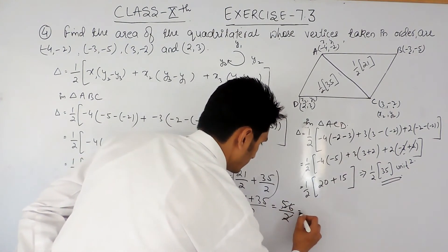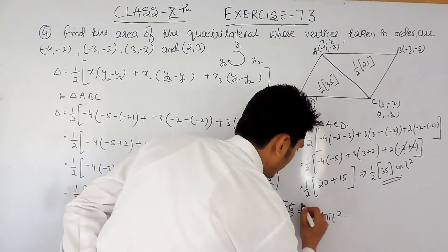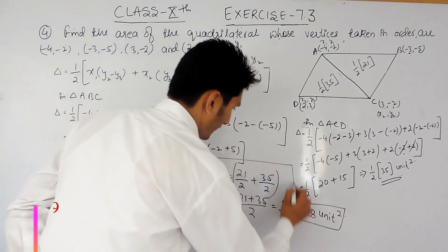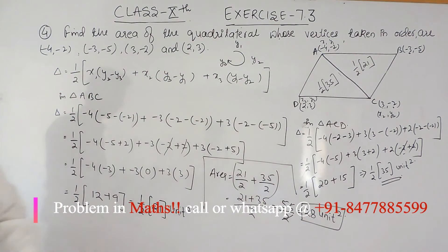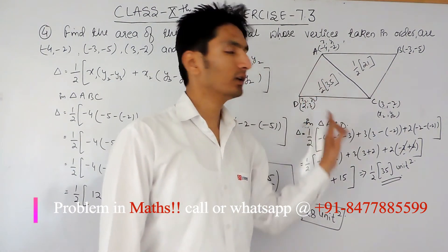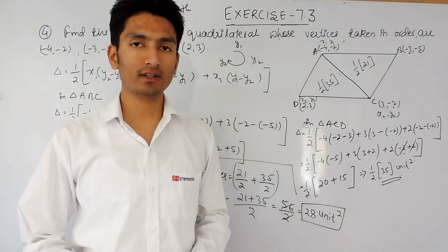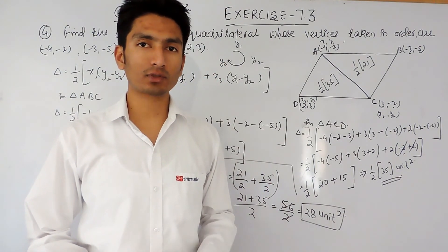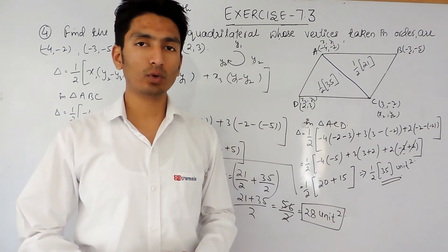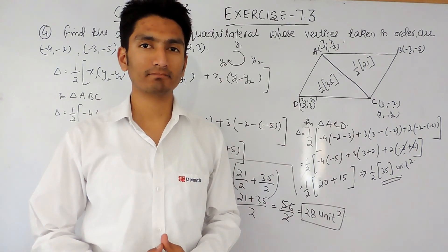The total area of the quadrilateral is the sum of both triangles: 21 over 2 plus 35 over 2, which equals 56 over 2, giving 28 square units. So the area of this quadrilateral is 28 square units. If you like this video please subscribe to our channel, and if you have any problem in maths you can contact us — our phone number, email address and WhatsApp number are given in the description. Thank you.